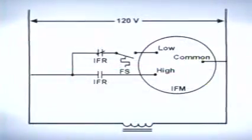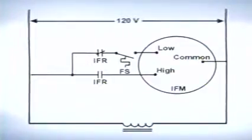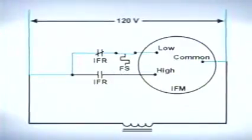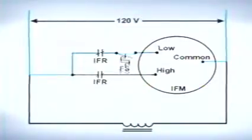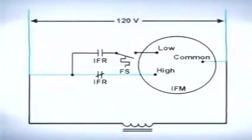Relays can also be used to change the speed of a fan motor depending upon the system's mode of operation. In the schematic shown here, the indoor fan will operate at low speed during the heating mode and at high speed when operating in either the cooling or fan only modes.